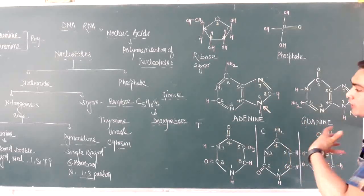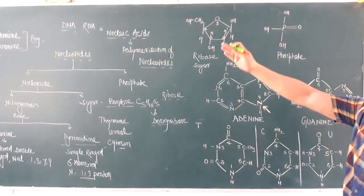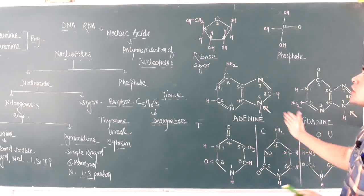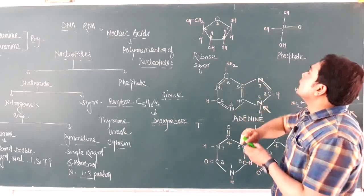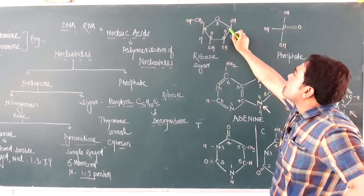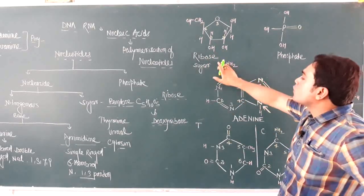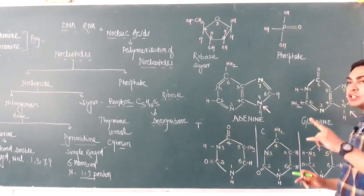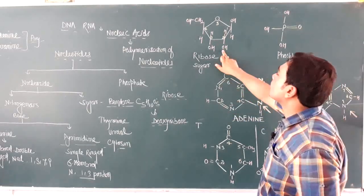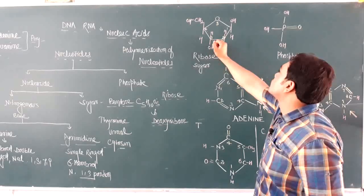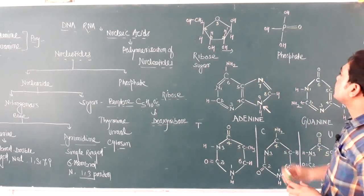Now we are going to discuss how nucleotides are formed from these different components. This is the ribose sugar, a pentose sugar. You can see the first, second, third, fourth, and fifth carbon atoms with oxygen and a hydroxyl group. This ribose structure is present in RNA. In DNA there is deoxyribose sugar, meaning there is a deficiency of one oxygen atom at the second carbon, where both hydrogens remain and the oxygen is removed.